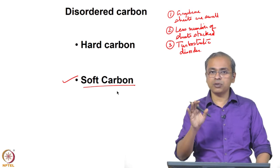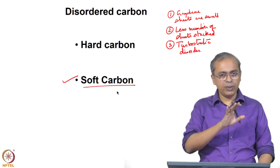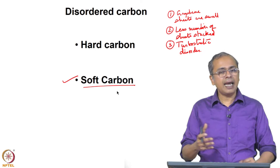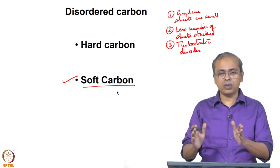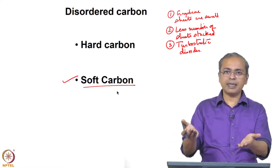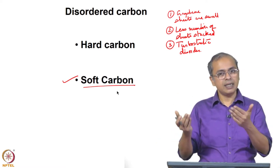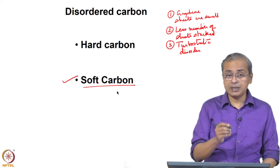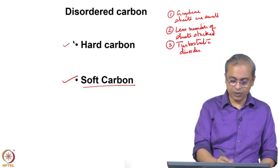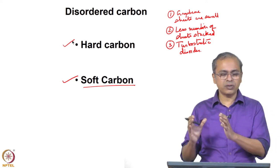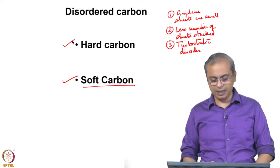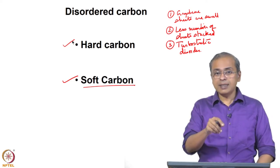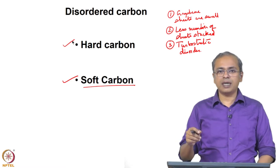On the other hand, there are forms of disordered carbon where you can do exactly the same procedure — heat to 700–800°C with inert gas — and wait indefinitely, but nothing will happen. It will remain disordered, and even if you repeat the process multiple times it continues to remain disordered. That form of carbon which does not improve its order when heat-treated is referred to as hard carbon.